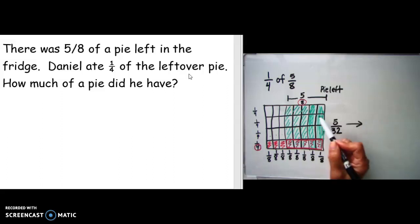Now that you understand that when we multiply, when we were looking for the leftover or how much pie was left, we were making it into smaller parts. We took one-fourth of five-eighths.